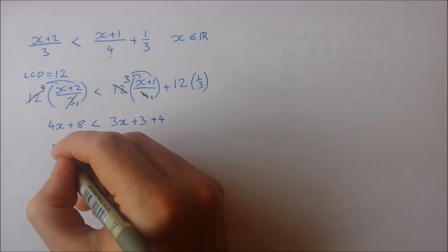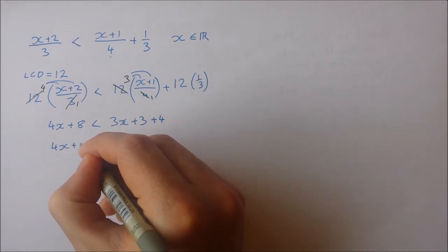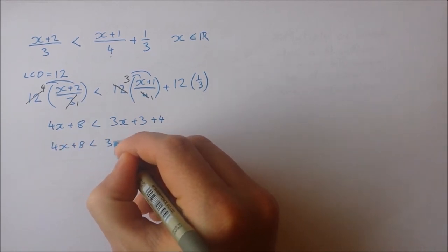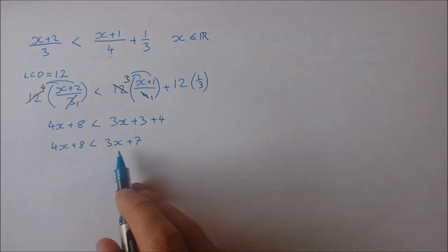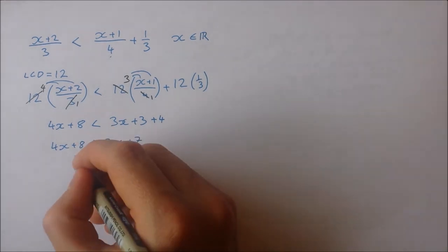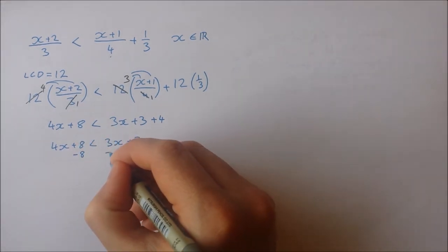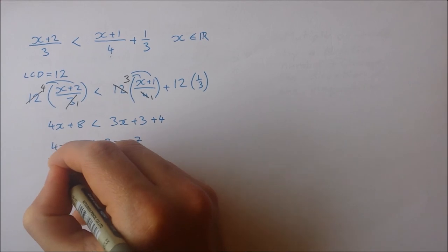Okay, let's tidy up the right hand side here. So I get 4x plus 8 is less than 3x plus 7. Let's take x's to one side, numbers to the other side. So I'm going to subtract 8 from both sides and I'm going to subtract 3x from both sides.